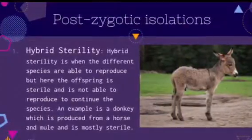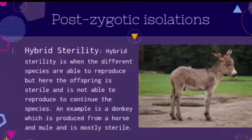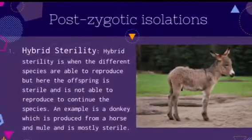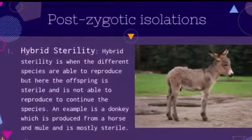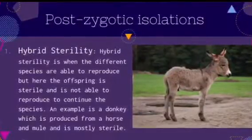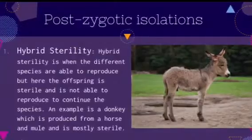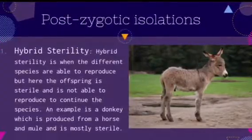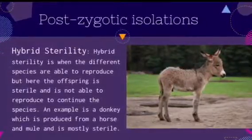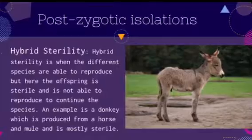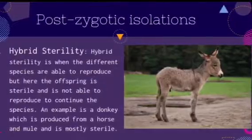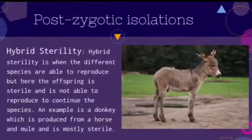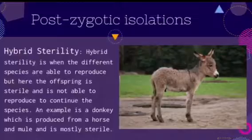In post-zygotic isolation, hybrid sterility is when different species are able to reproduce, but the offspring is sterile and is not able to reproduce to continue the species. An example is a donkey, which is produced from a horse and a mule, but it is mostly sterile.